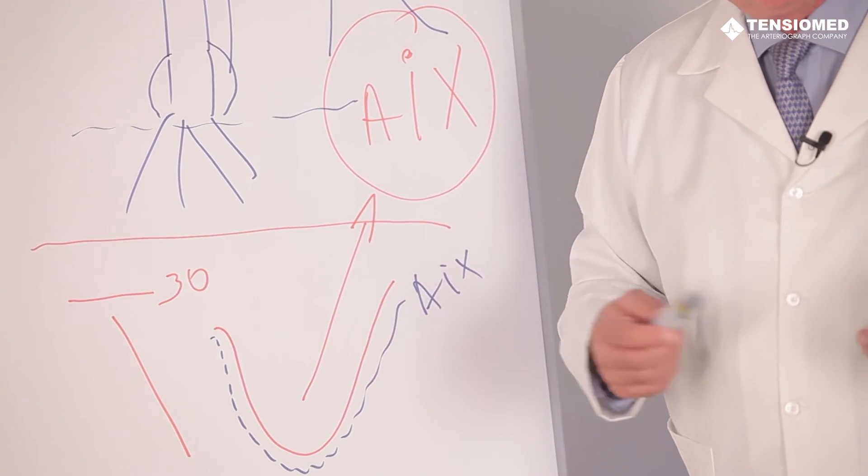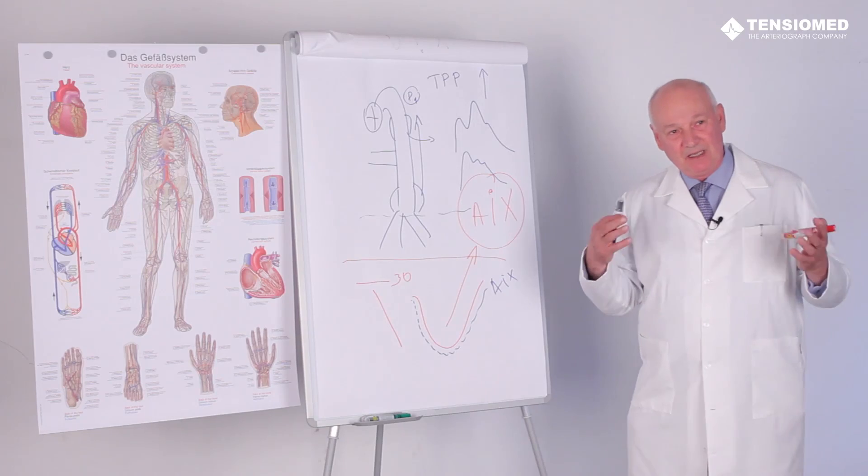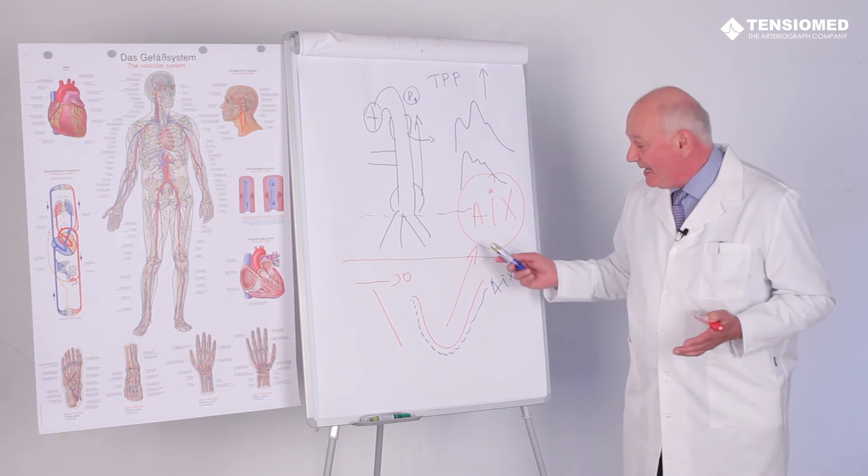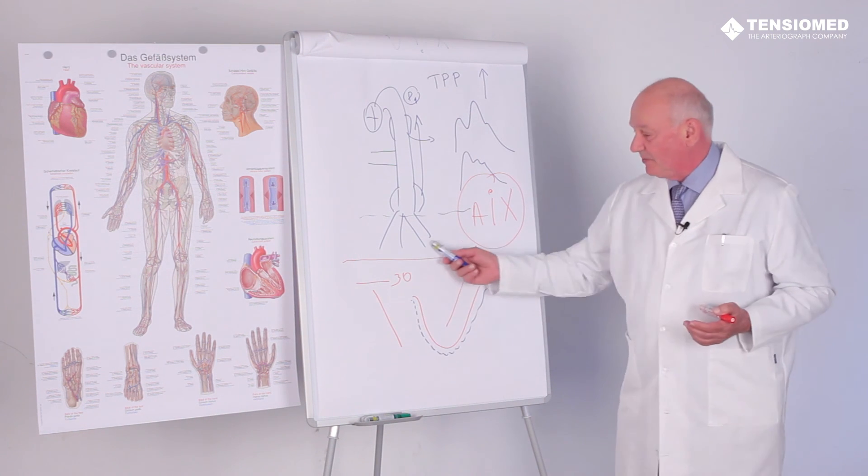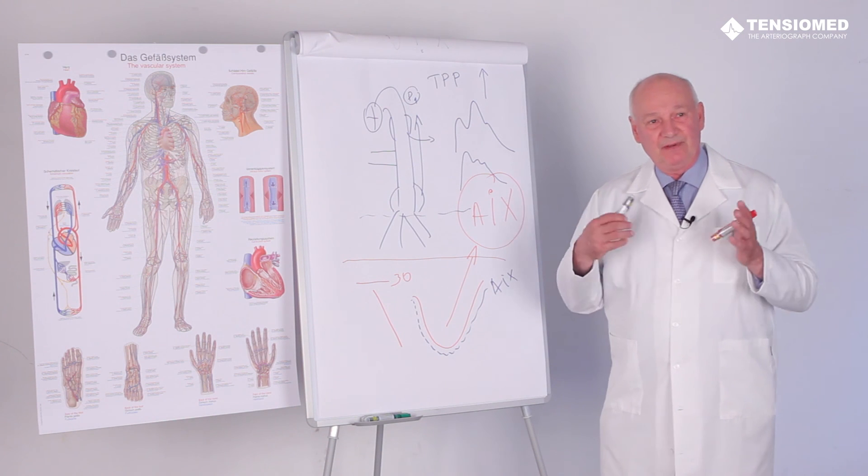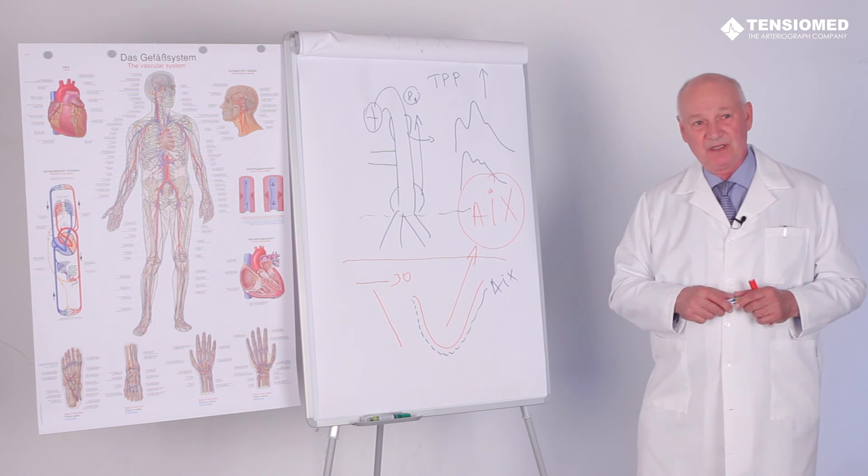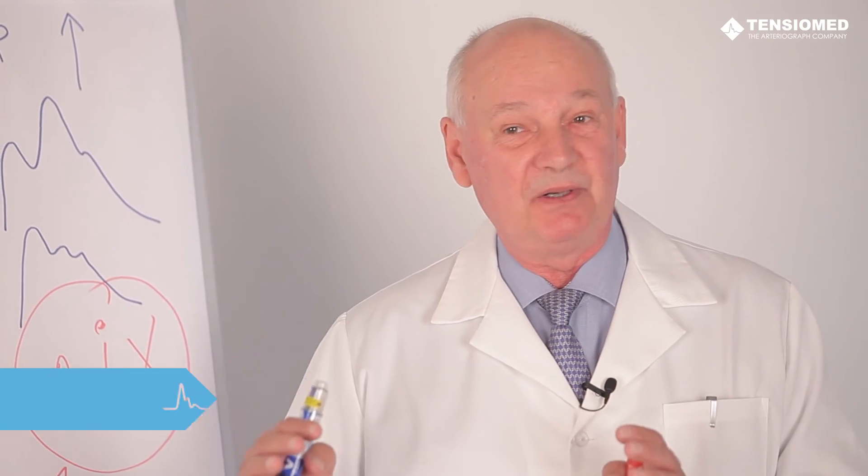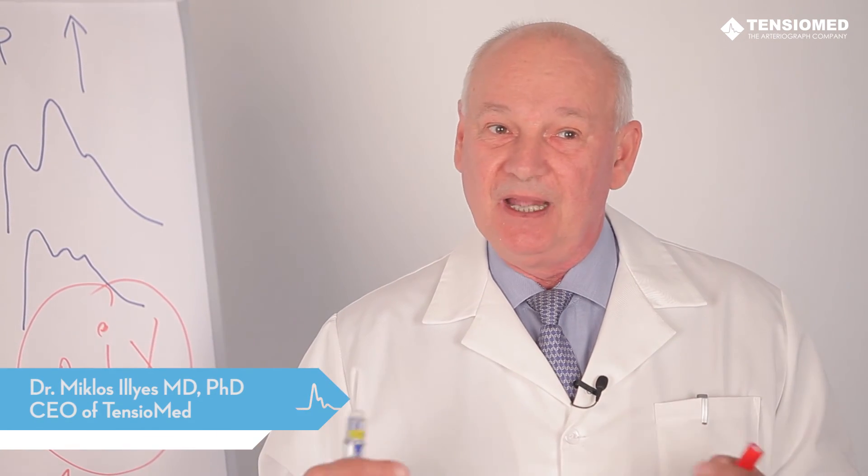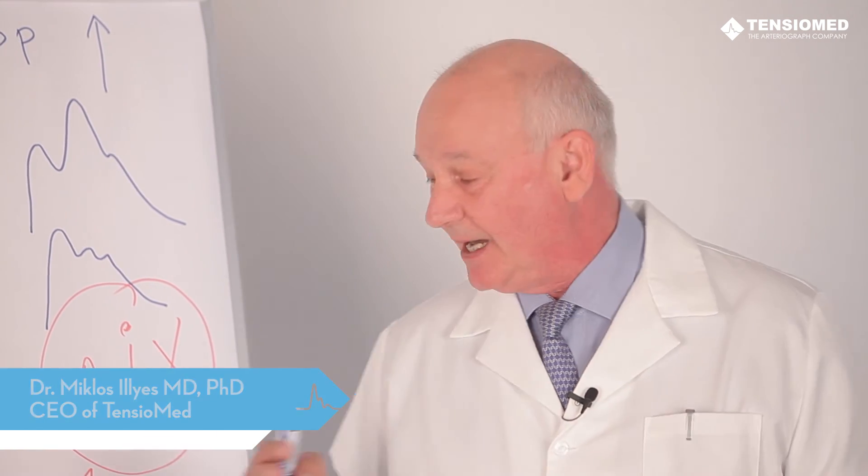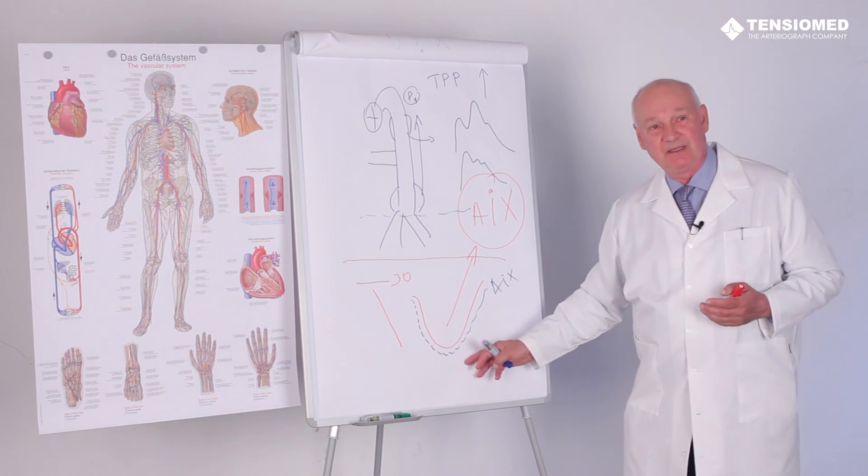So in case of endothelial dysfunction, when increased peripheral vascular resistance is existing, this measurement provides us information about the very early stage when only small arteries are mostly constricted due to the missing nitric oxide synthesis.